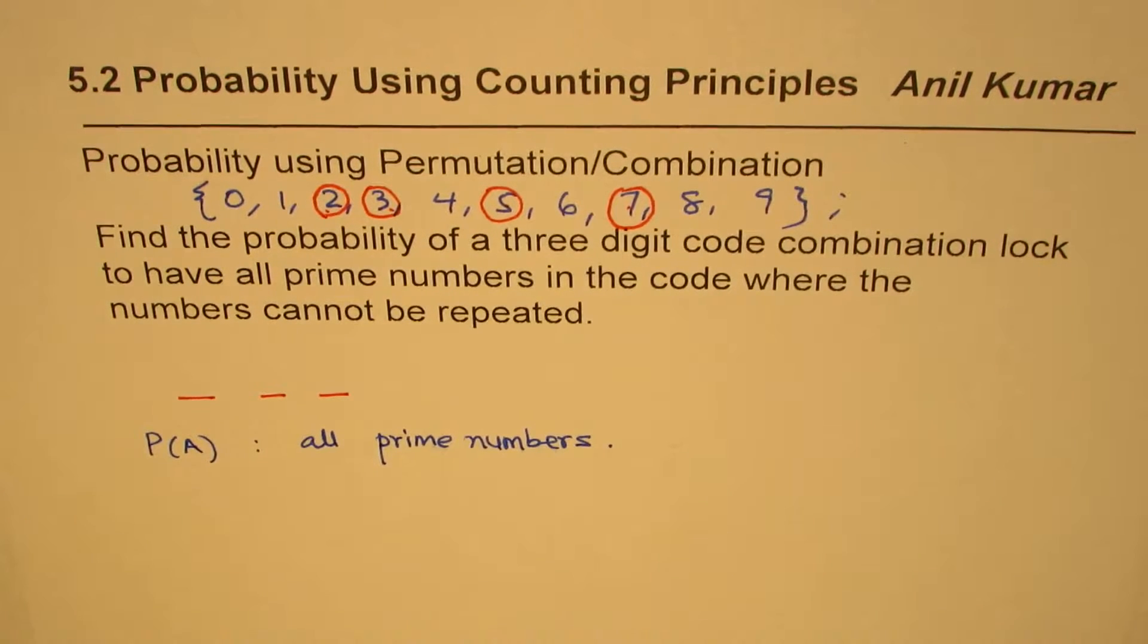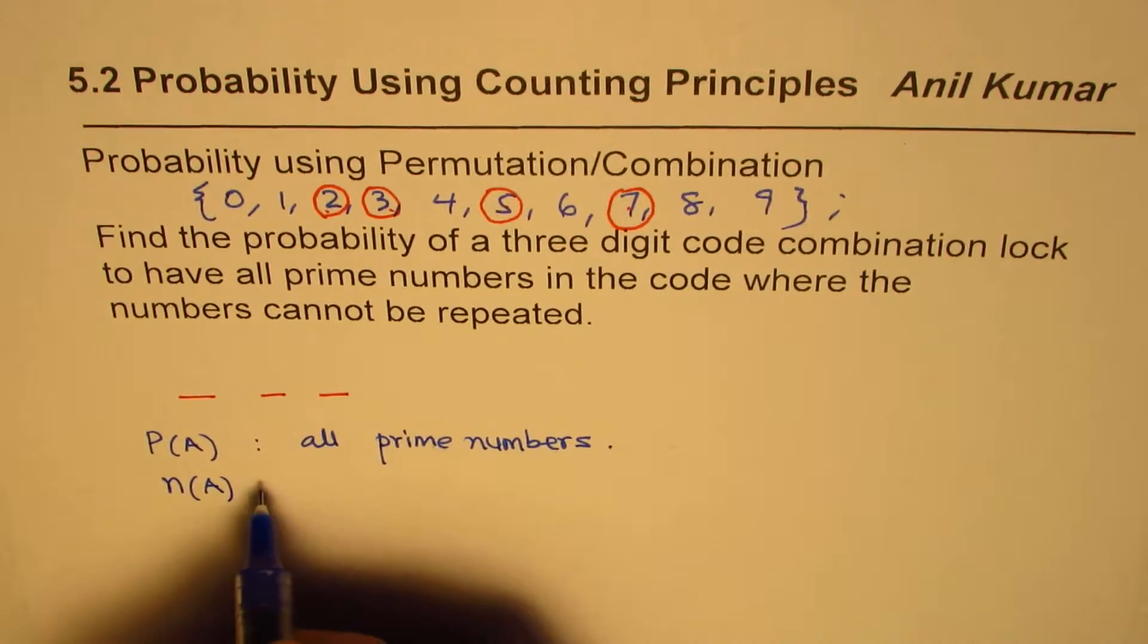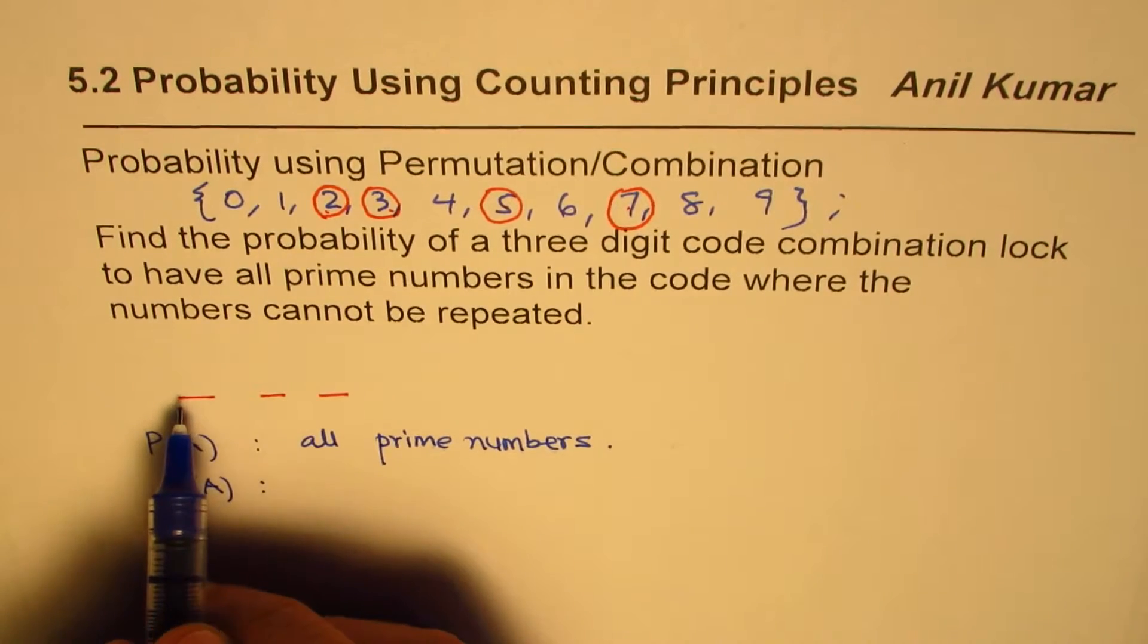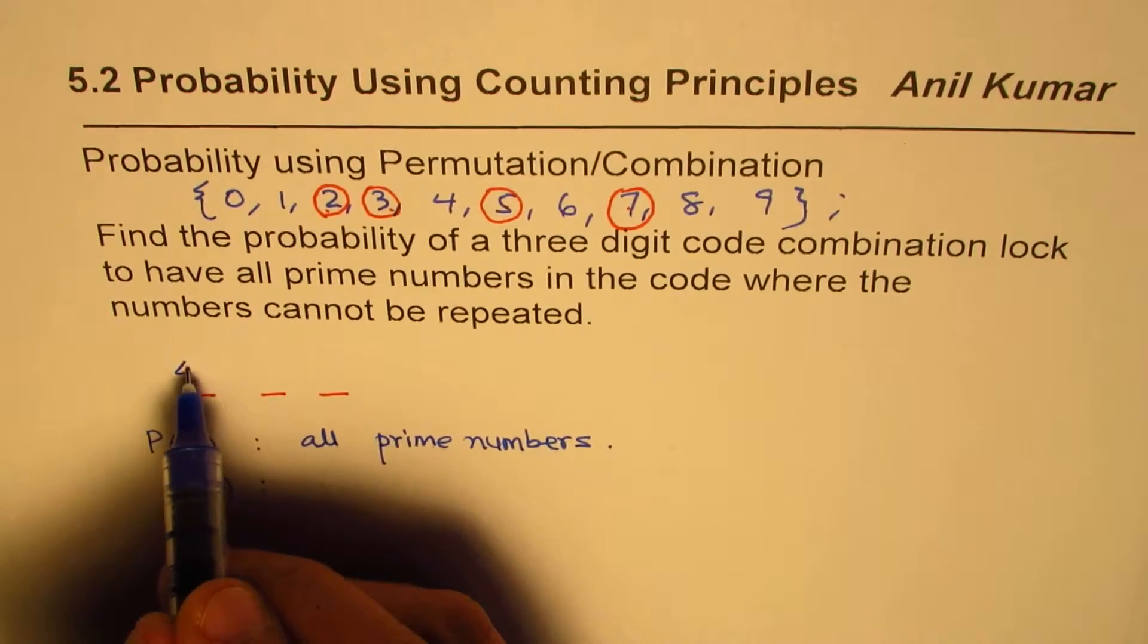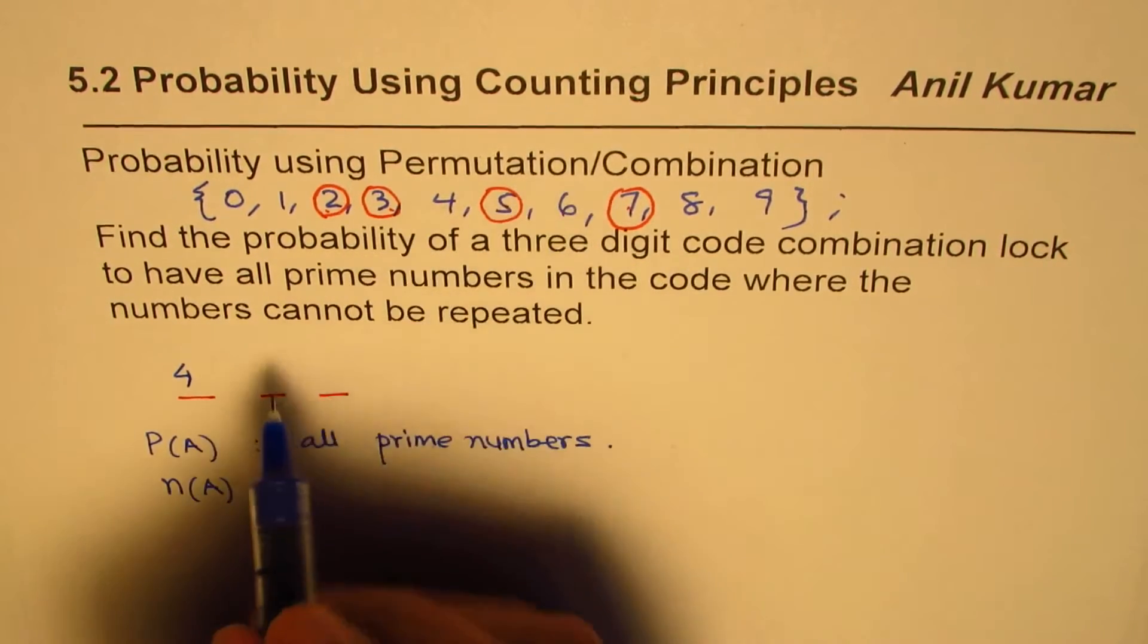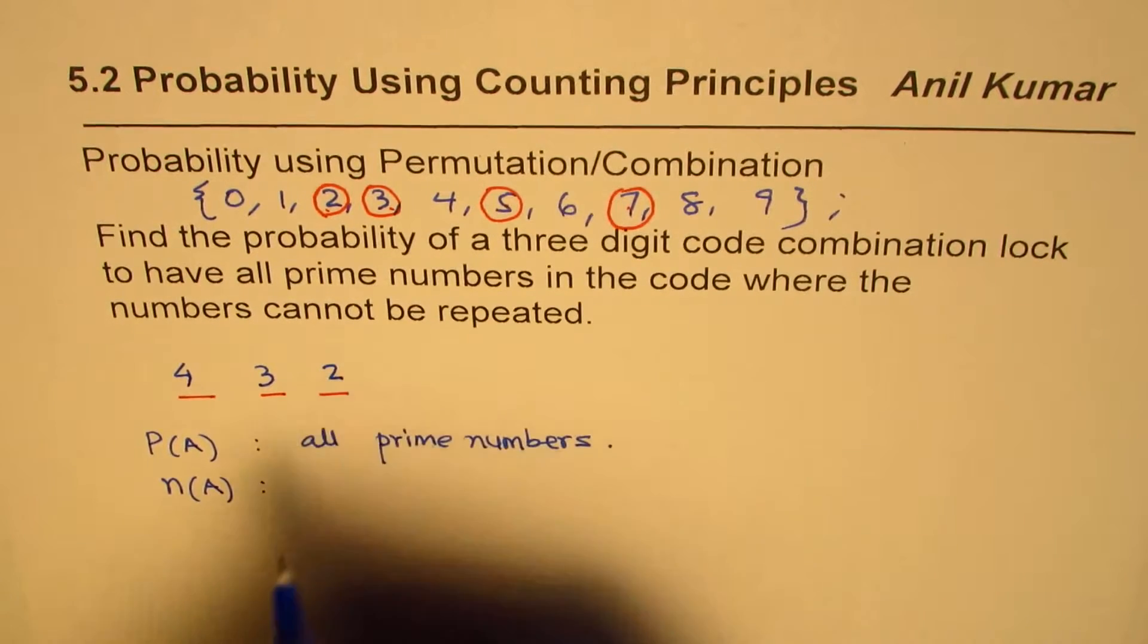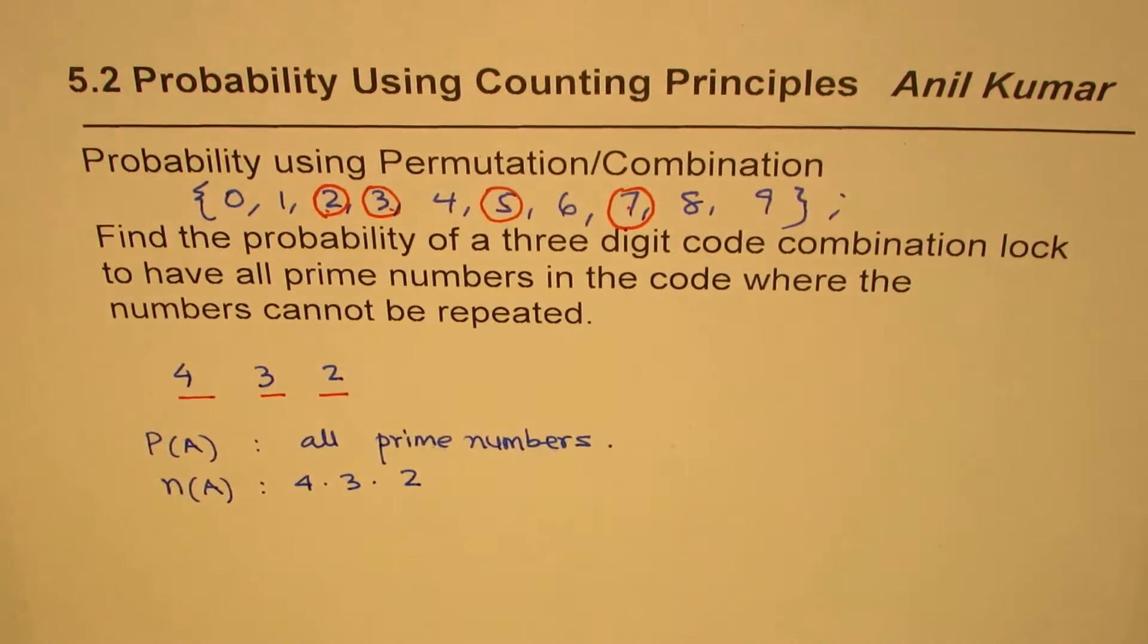Now, possible or favorable outcomes are, if we have 1, 2, 3, 4, in the first position, we can place any one of them. That means we have choice of 4. Once we place one of them, we are left with 3, and then we are left with 2. And therefore, favorable outcomes are 4 times 3 times 2. So these are the favorable outcomes.